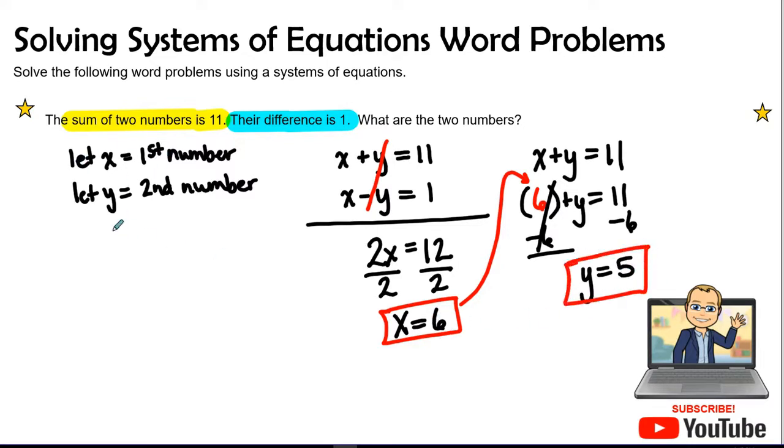And there is my two numbers. So we know that our first number is six. And our second number is five. So those two numbers are six and five. So let's just double check. Remember six plus five is 11, six minus five is one. We have our answer. That wasn't too bad.